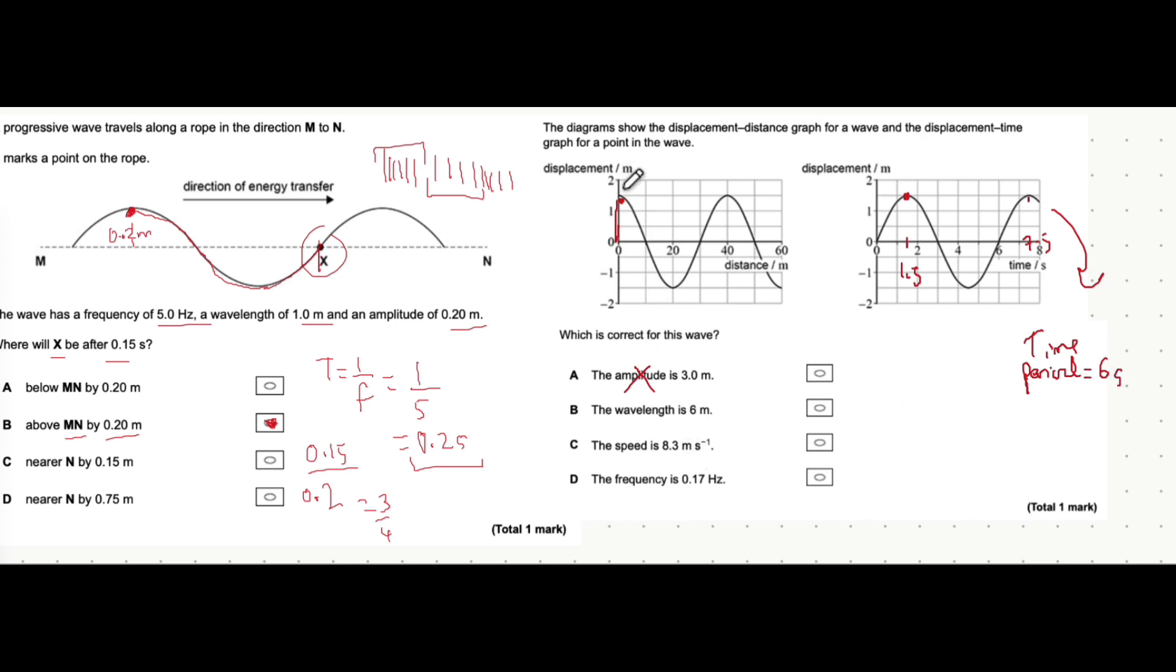The wavelength, let's look at this graph on the left, because it gives values in distances. Let's look from peak to peak. From 0 meters to 40 meters is one complete wavelength, which is 40 meters. So that's incorrect.